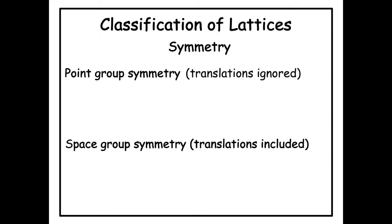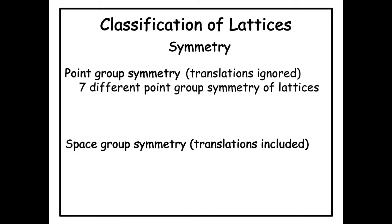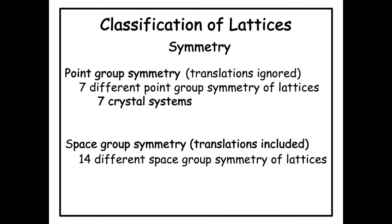If we look at only the point group symmetry of a lattice, then there are 7 different kinds of point group which a lattice can have. These 7 different point groups are called 7 crystal systems. If we look at the space group symmetry, then there are 14 different types of symmetry possible, and these are the 14 Bravais lattices. These definitions are independent of the relationship between lattice parameters — that's the important point.